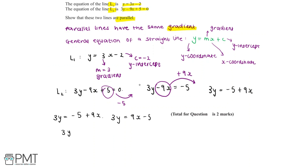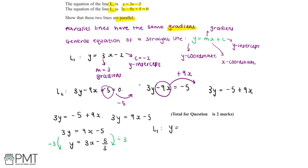To get to y on its own, we need to divide both sides by 3 because we have 3y. Dividing both parts by 3 gives us y equals 9x minus 5 all divided by 3. So 9 divided by 3 gives 3x, and minus 5 divided by 3 we leave as a fraction, minus 5 over 3. So the equation for L2 is y equals 3x minus 5 over 3. We can now write both equations side by side: L1 is y equals 3x minus 2, and L2 is y equals 3x minus 5 over 3.